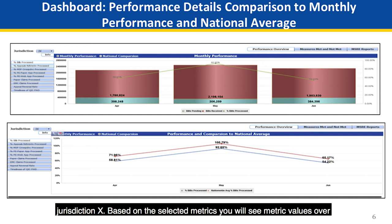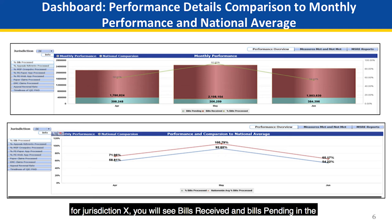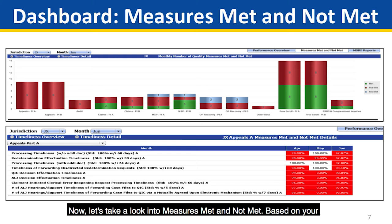Let's take a look at Performance Overview for Jurisdiction X. Based on the selected metrics, you will see metric values over time in comparison to the national average. In this example, for bills processed for Jurisdiction X, you will see bills received and bills pending in the cylinders, and the percent of bills processed are calculated each month.